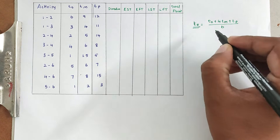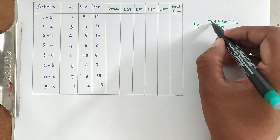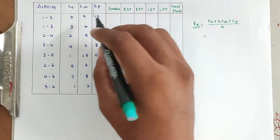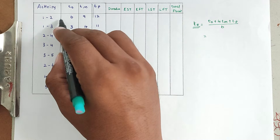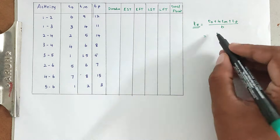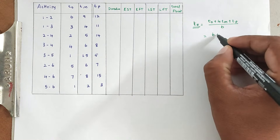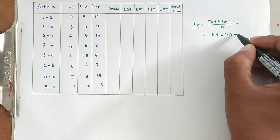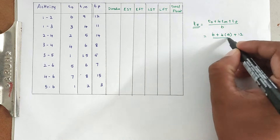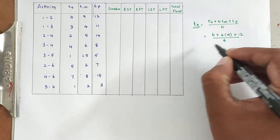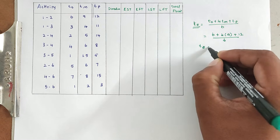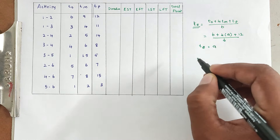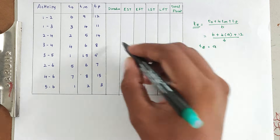Taking activity 1-2 as an example: TO is 6, TM is 9, TP is 12, so TE = (6 + 4×9 + 12) / 6. Solving this, we get T expected = 9. Likewise, we can calculate the expected duration for all the activities.